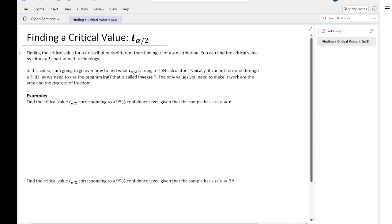Finding the critical value for a T distribution is different than finding it for a Z distribution. You can find the critical value either by using a T chart or with technology. In this video, I'm going to go over how to find T alpha over 2 using a TI-84 calculator. Typically it cannot be done through a TI-83 as we need to use the program inverse T. But if you have an 84, it comes with it automatically. The only values you need to make it work are the area and the degrees of freedom.